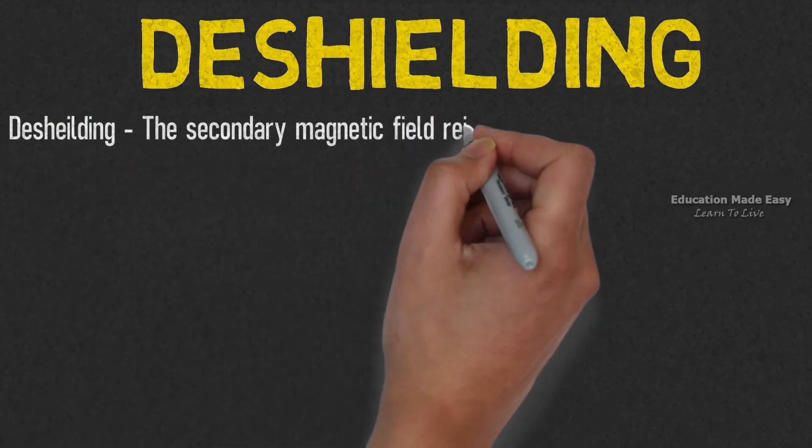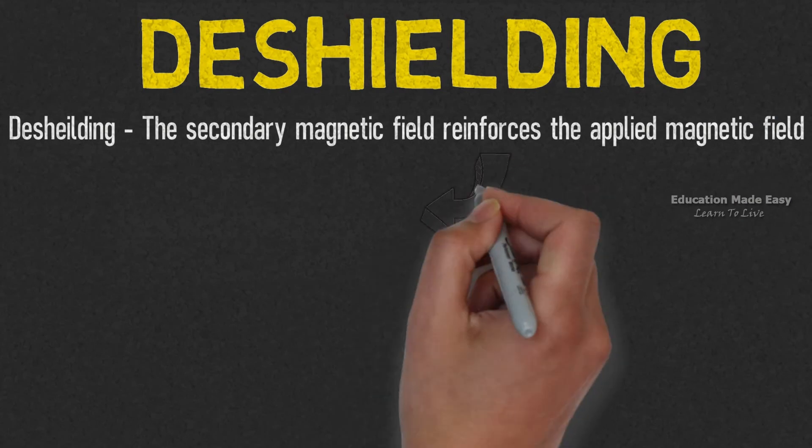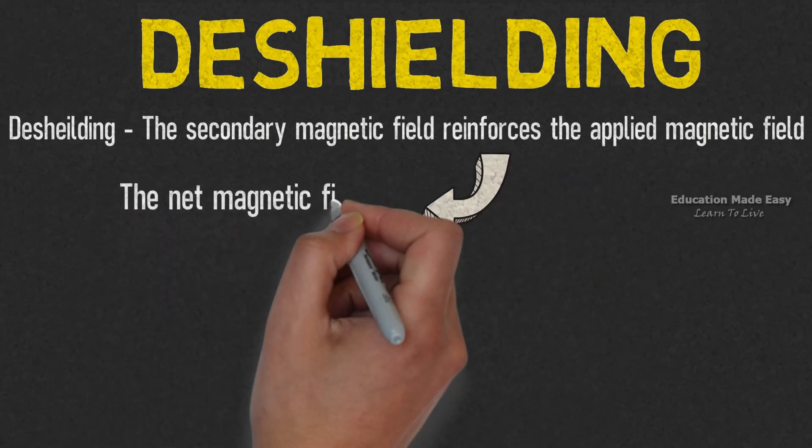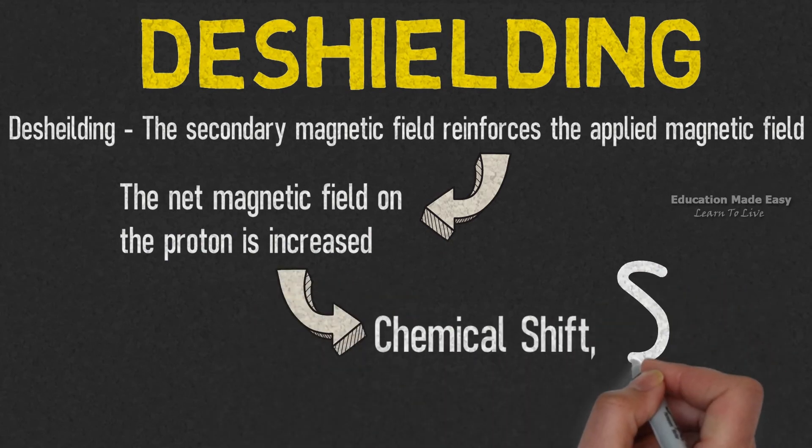Now let's learn about deshielding. We know deshielding means the secondary magnetic field reinforces the applied field. By reinforcing, it means that the net magnetic field on the proton is increased. This means the value of chemical shift increases.